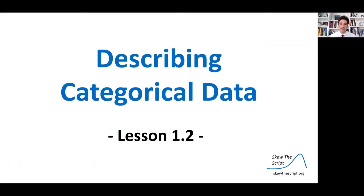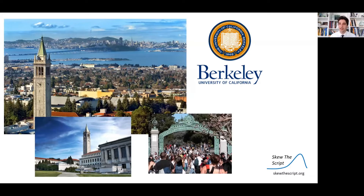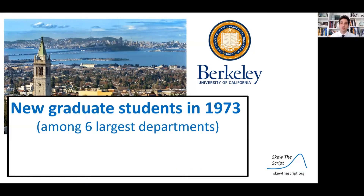Today's lesson is on describing categorical data. This is lesson 1.2 in our course sequence. We're looking at data from UC Berkeley, which is California's flagship public university. Specifically, we're going to look at data on newly admitted graduate students in 1973. If you're applying to be a graduate student, that means you're applying to get a PhD or a master's, and you're going to apply to a specific department — English, history, or physics. We're going to look at data among the six largest departments.